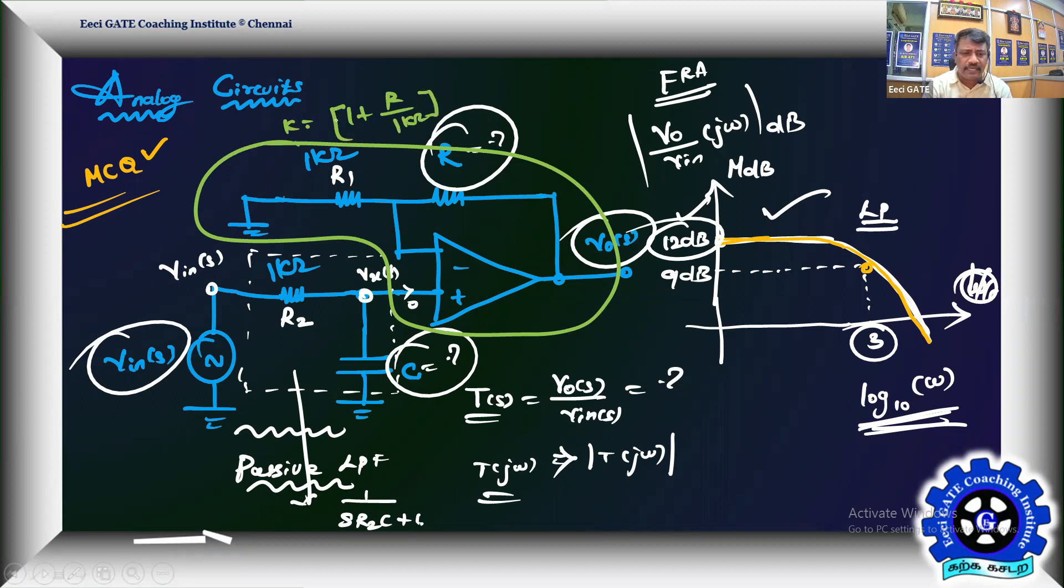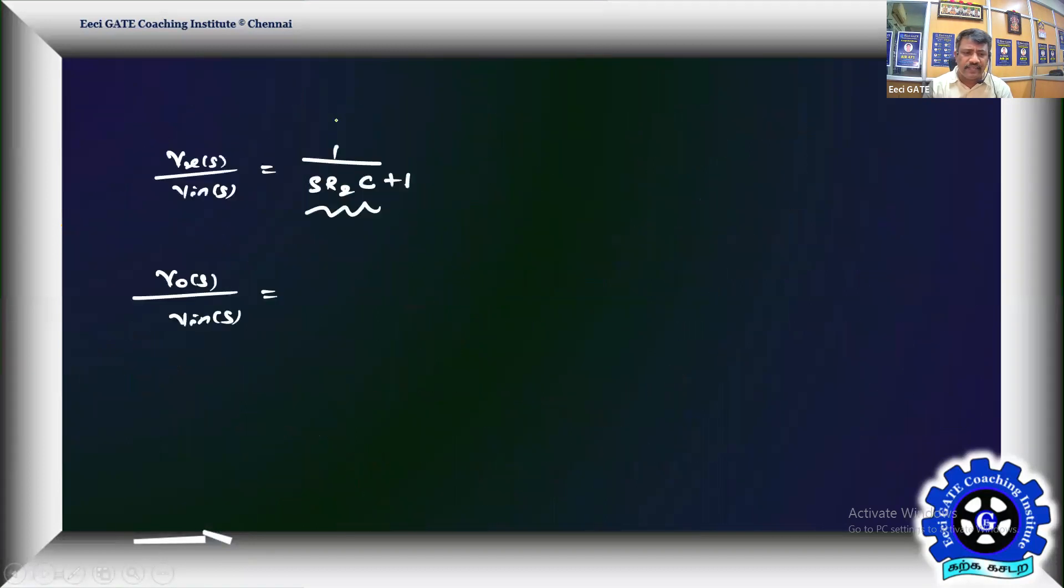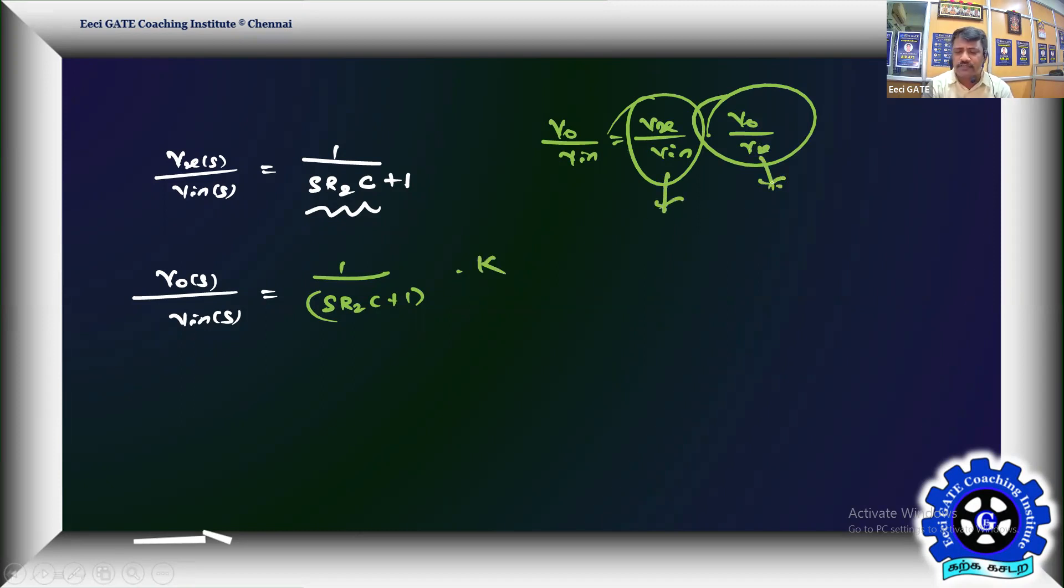Therefore I will get this as k × 1/(sR2C + 1). Actually it is V0/Vin I'm finding in this way. First I'm getting Vx/Vin and then V0/Vx. Vx is the non-inverting terminal potential, Vx is the input to the amplifier, V0 is output of the non-inverting amplifier. So into k, you know this transfer function.